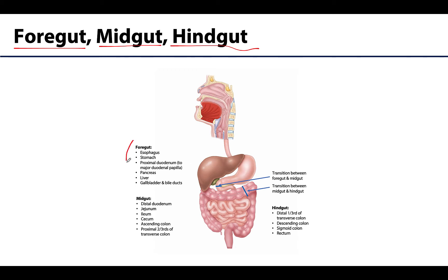The foregut includes non-abdominal structures like the pharynx, but we'll focus on the abdominal structures. I describe these as the more superior structures — the stomach and liver are derived from the foregut. It transitions into the midgut around the level of the major duodenal papilla, which is internal within the duodenum. So portions of the duodenum are foregut derived and the more distal portions are midgut derived — an example of one visceral structure having two different embryological divisions.